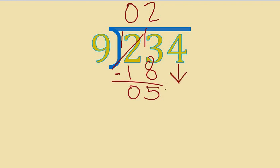Next step bring down. How many nines are in 54? Nine times what equals 54? It's six and nine times six equals 54. Great. We're subtracting the same number. No remainder. Whole number answer. There are 26 nines in 234.